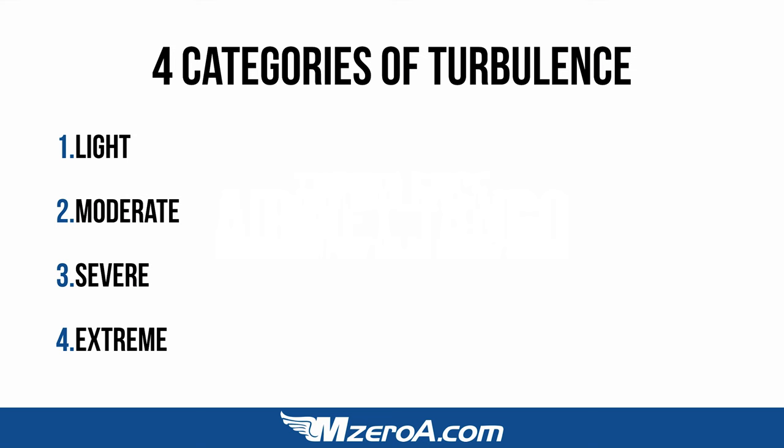Turbulence is issued as an Air Met Tango — it falls under the turbulence category. There are actually four categories of turbulence when it comes to reporting: they are light, moderate, severe, and extreme.